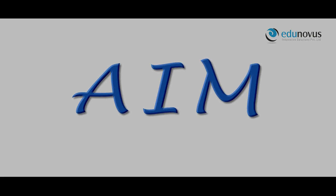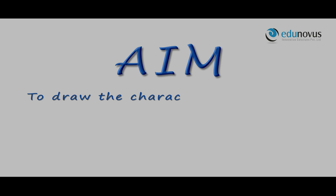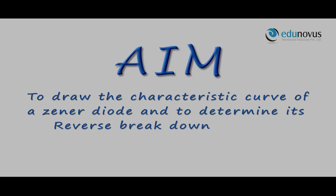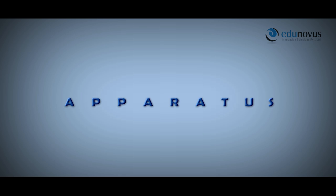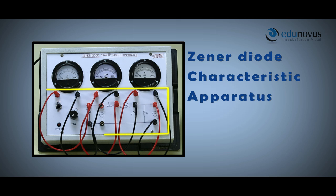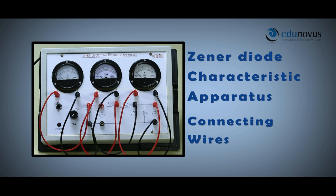The aim of this experiment is to draw the characteristic curve of a zener diode and to determine its reverse breakdown voltage. The apparatus used in this experiment are a zener diode characteristic apparatus and connecting wires.